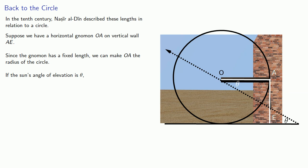The sight line cuts the circle at some point B, and GB will be the half chord of theta, AD will be the shadow, and OD will be the hypotenuse of the shadow.